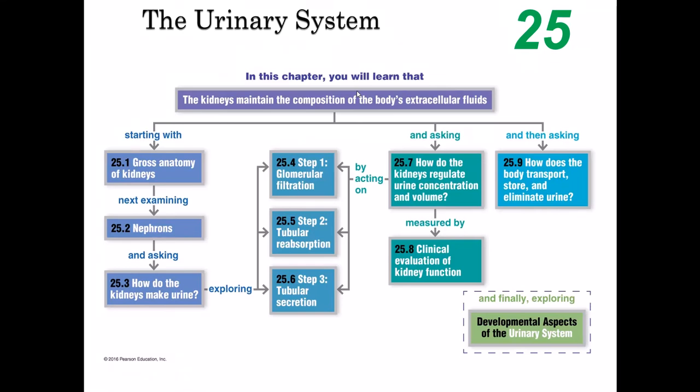The last lecture focused on finishing up the first process involved in making urine — the filtration process — where the glomerulus filters the blood and creates the filtrate, which is very similar in composition to blood plasma, minus the plasma proteins. But before we can call it urine, we go through the other two processes: reabsorption and secretion, which are done by the renal tubules.